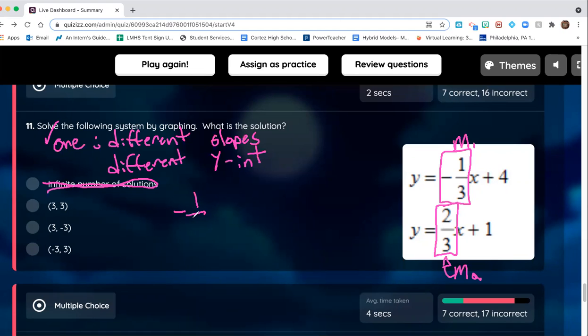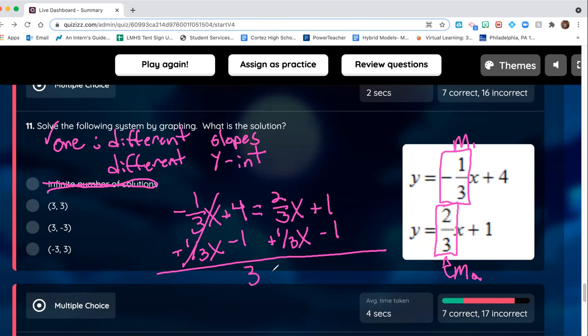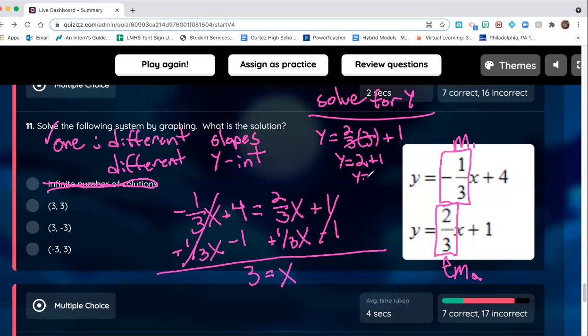They're both set equal to y. Set them equal. I'm going to move this negative one-third to the right because I don't really like keeping negative terms around for too long. This canceled, 4 minus 1 is 3, 2/3 plus 1/3 is just x, and then this canceled. So x is 3. Plug it back in, solve for y. Y equals 2/3 times 3 plus 1, threes cancel, y equals 2 plus 1, so y is 3 and x is 3. This is your best option.